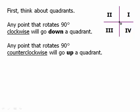Any point that rotates 90 degrees counterclockwise will go up a quadrant. So if it's in 1 it's going to get moved to 2. From 2 to 3. From 3 to 4. And from 4 back to 1. So 1, 2, 3, 4 back to 1. That's the counterclockwise direction of rotation.